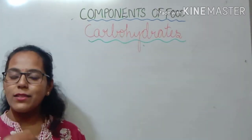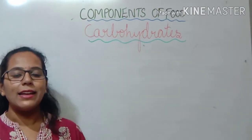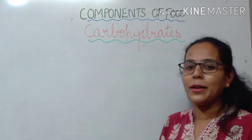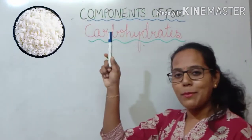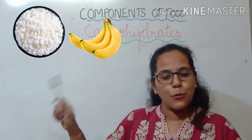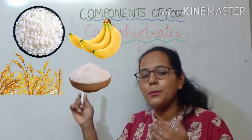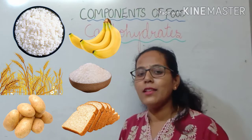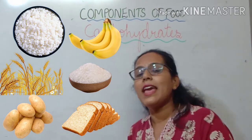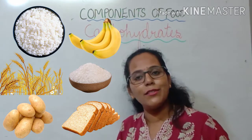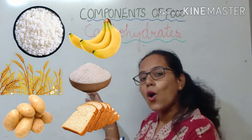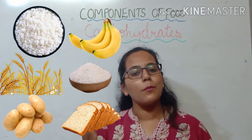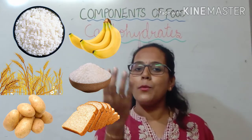How do we get carbohydrates into our body? By eating rice, banana, wheat, sugar, potatoes, and bread. All these foods, when we consume them, give some amount of carbohydrates to our body. They are the sources of carbohydrates, and it is very essential to include them in our diet.